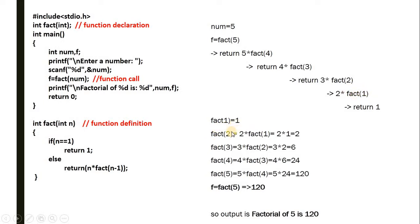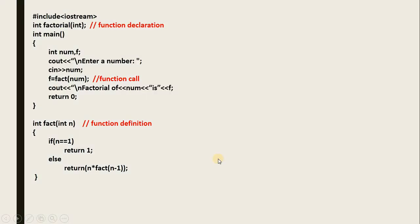Now we unwind: fact(1) = 1, so fact(2) = 2 * 1 = 2. fact(3) = 3 * fact(2) = 3 * 2 = 6. fact(4) = 4 * fact(3) = 4 * 6 = 24. fact(5) = 5 * fact(4) = 5 * 24 = 120. So overall, f = fact(5) returns 120, and your output will be 120.